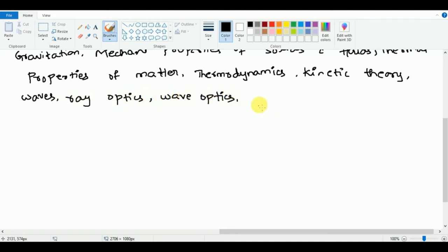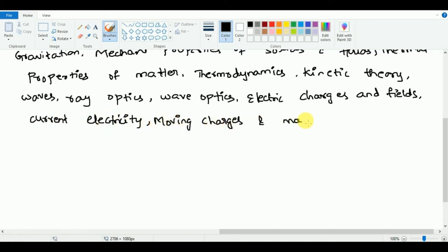Dual nature of radiation and matter, atoms, nuclei, semiconductor electronics, and last but not least, communication systems.